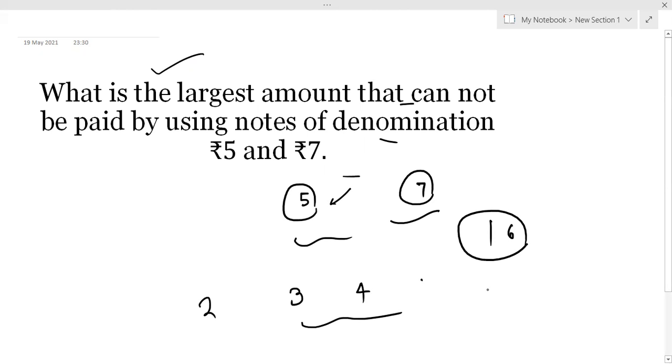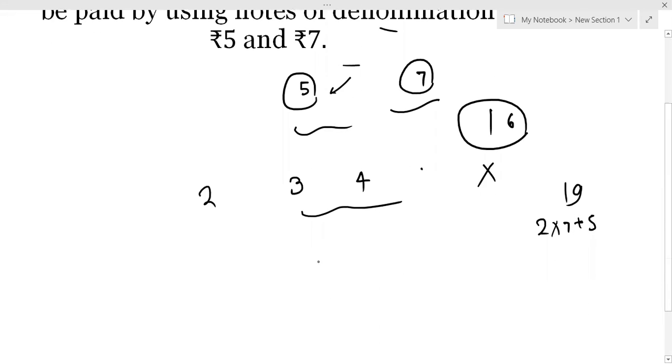Here we have ₹16. We can't do ₹19, but we can do it with 2 seven-rupee notes plus 1 five-rupee note. So we need to find the largest amount that we can't make. The largest amount that we cannot make is ₹23.